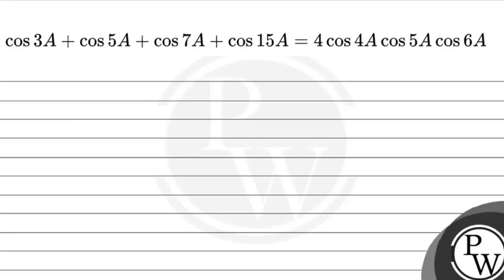Hello. The question says that you have to show that cos3a plus cos5a plus cos7a plus cos15a is equal to 4·cos4a·cos5a·cos6a. The key concept for this question is the formula: cos A plus cos B.